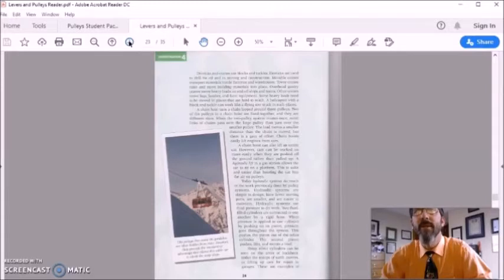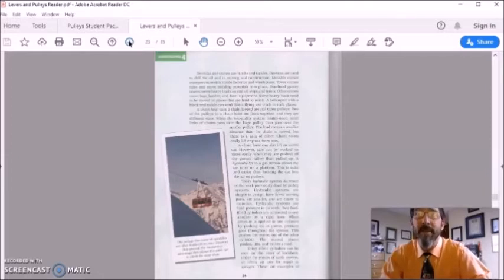A chain hoist uses a chain looped around three pulleys. Two of the pulleys in a chain hoist are fixed together and they are different sizes. When the two pulley system rotates once, more links of chain pass over the large pulley than over the smaller pulley. The load moves a small distance, then the chain is moved. But there is a gain in effort. Chain hoists usually lift engines from cars. A chain hoist can also lift an entire car.